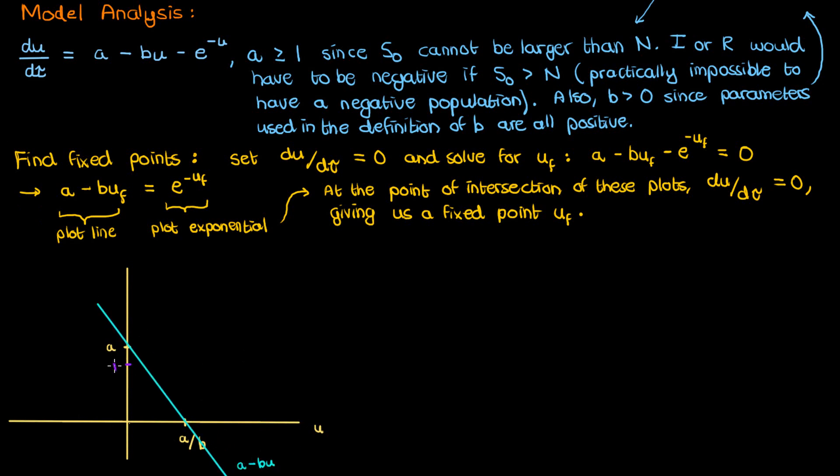I'll then plot the exponential function which hits the vertical axis at 1 and then slowly approaches 0 as we go down horizontally. Now keep in mind the restrictions on a and b. a must be greater than or equal to 1 and b must be positive. What I've plotted here is just one scenario.